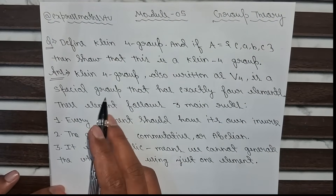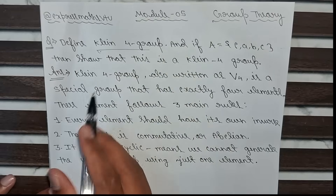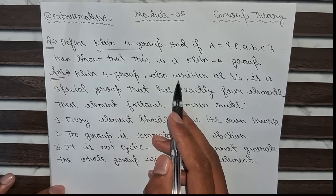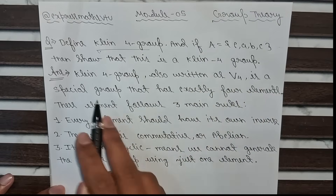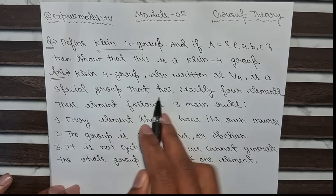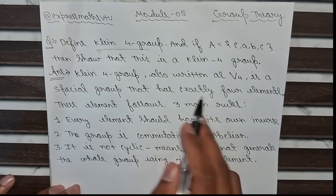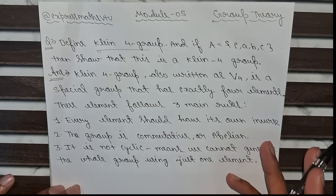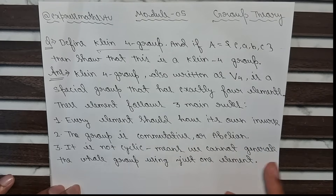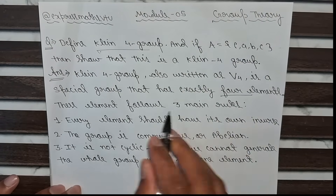First of all we will see what is a Klein four-group. The Klein four-group, also denoted by V4, is a special group that has exactly four elements. We cannot include five or six elements — not less than four, exactly four elements should be there.